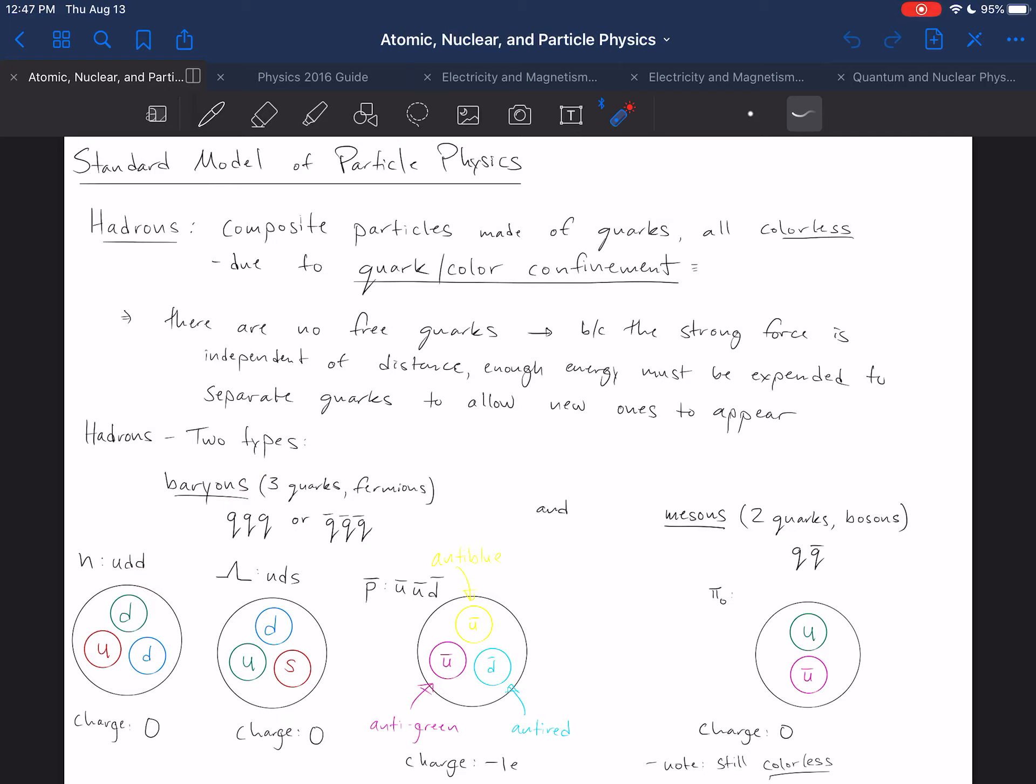So hadrons consist of baryons and what are known as mesons, which we'll get to in a second. An example baryon included that proton and also a neutron. And a neutron is composed of an up, down, down. And I will leave that as an exercise to the reader to confirm that if the neutron is up, down, down, then the charge on that neutron or the electric charge on that neutron will be zero. This is plus two thirds minus one third minus one third.